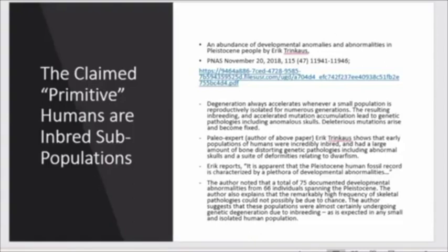We can see here a paper that claims primitive humans are inbred subpopulations. This was a paper by Eric Trinkaus. He's a paleo expert, and he noted that a total of 75 documented developmental abnormalities from 66 individuals spanning the Pleistocene. The author also explains that the remarkably high frequency of skeletal pathologies could not possibly be due to chance.